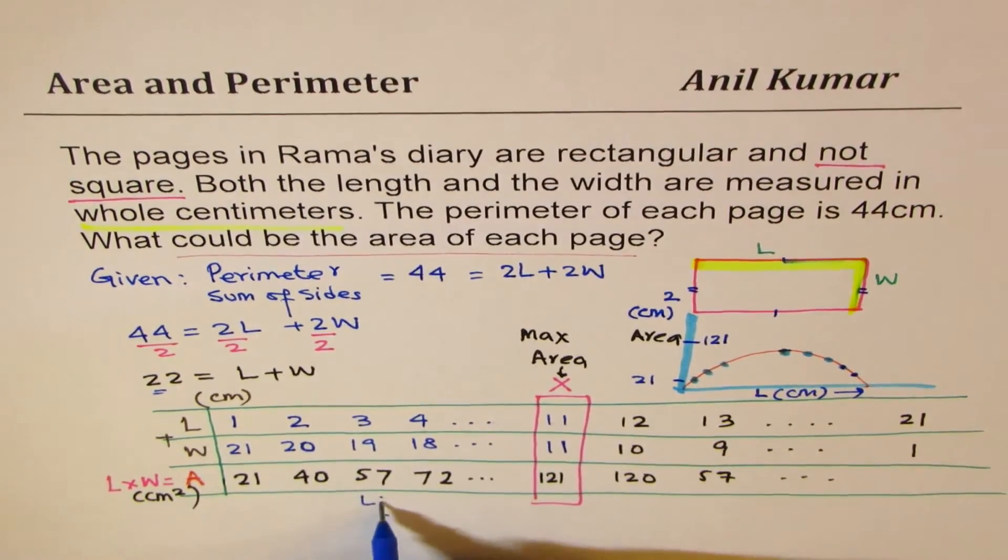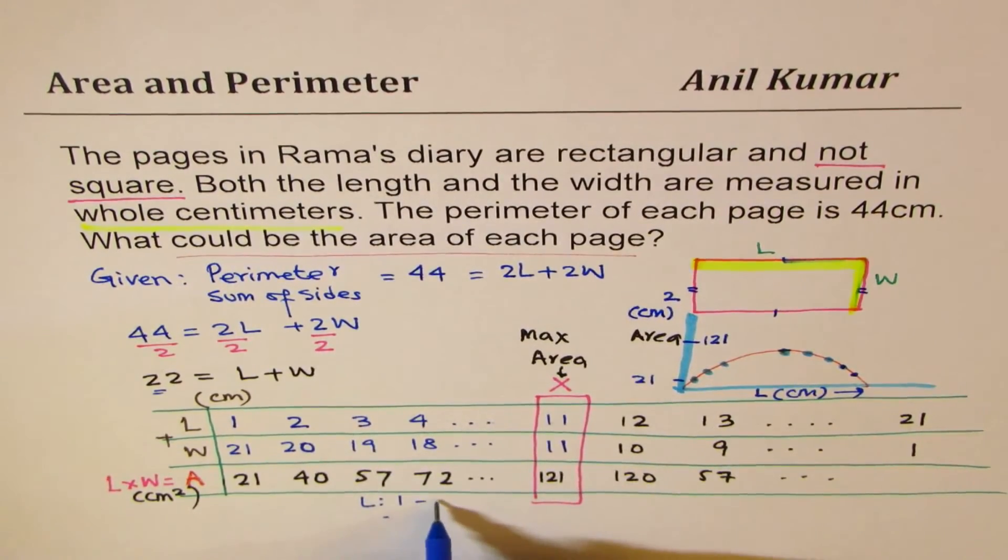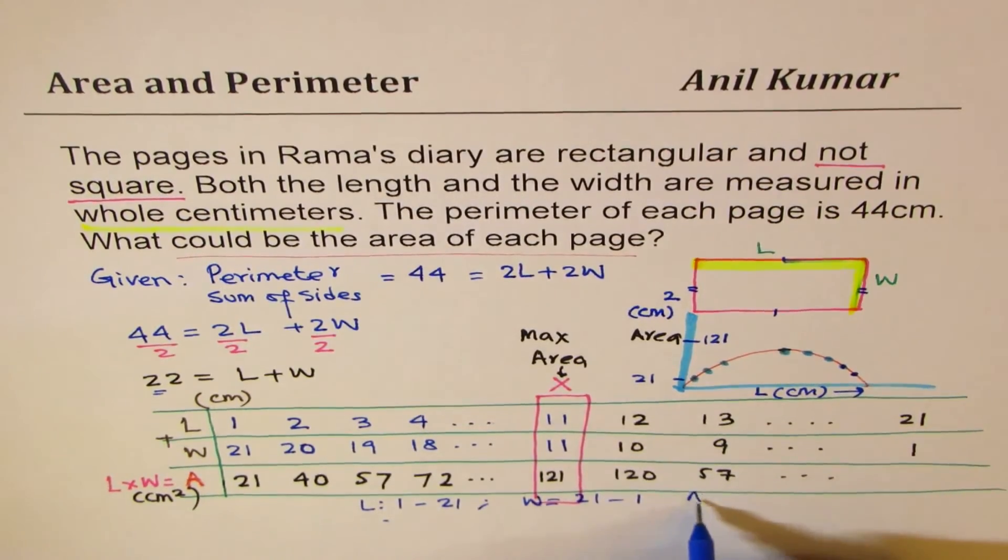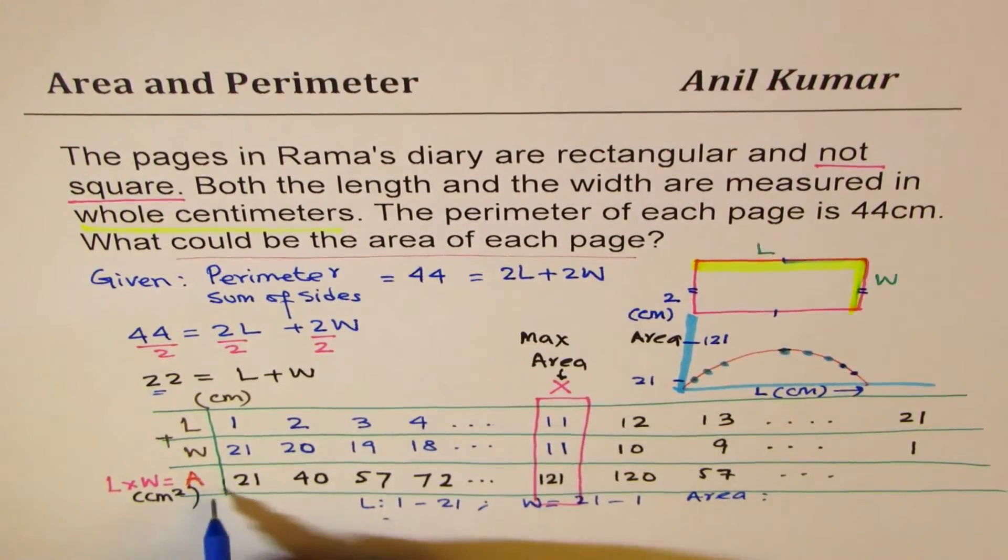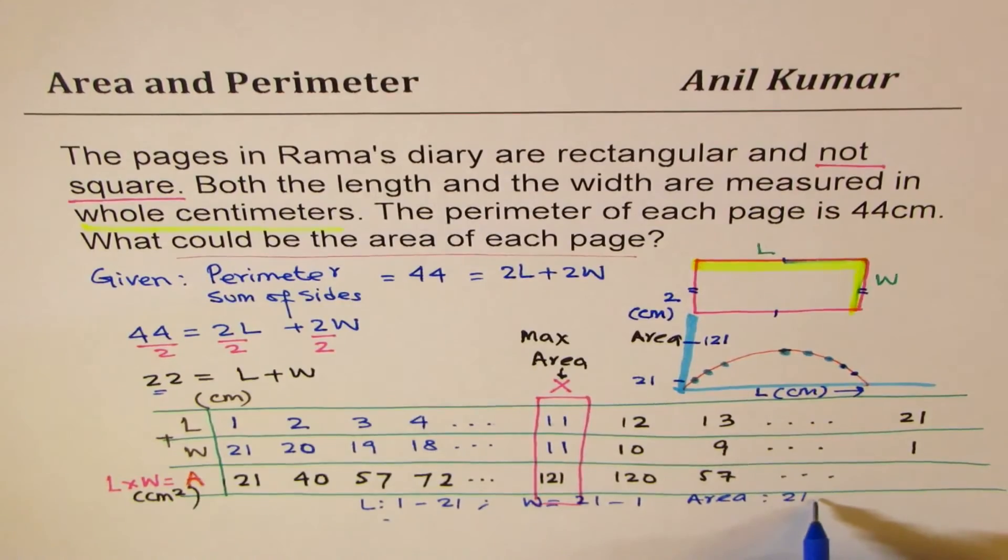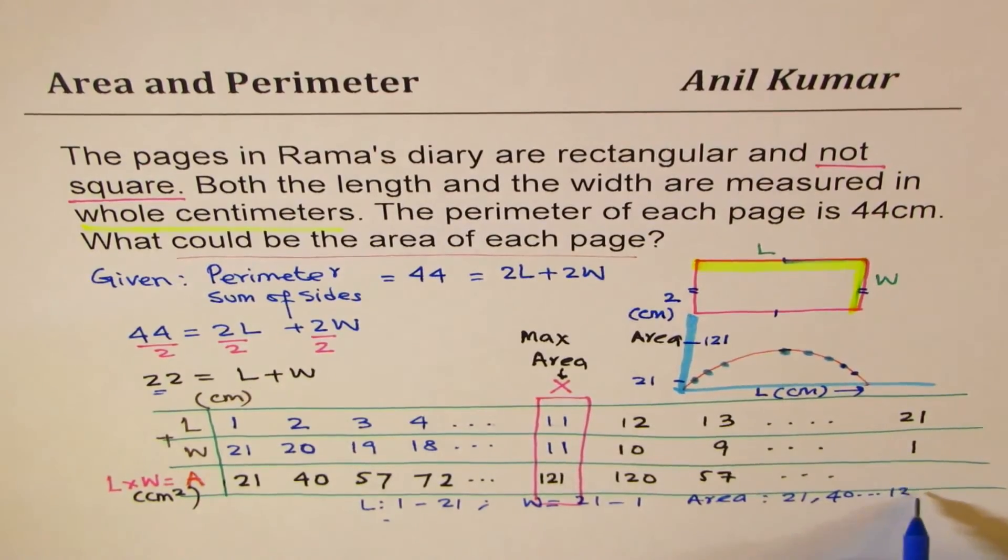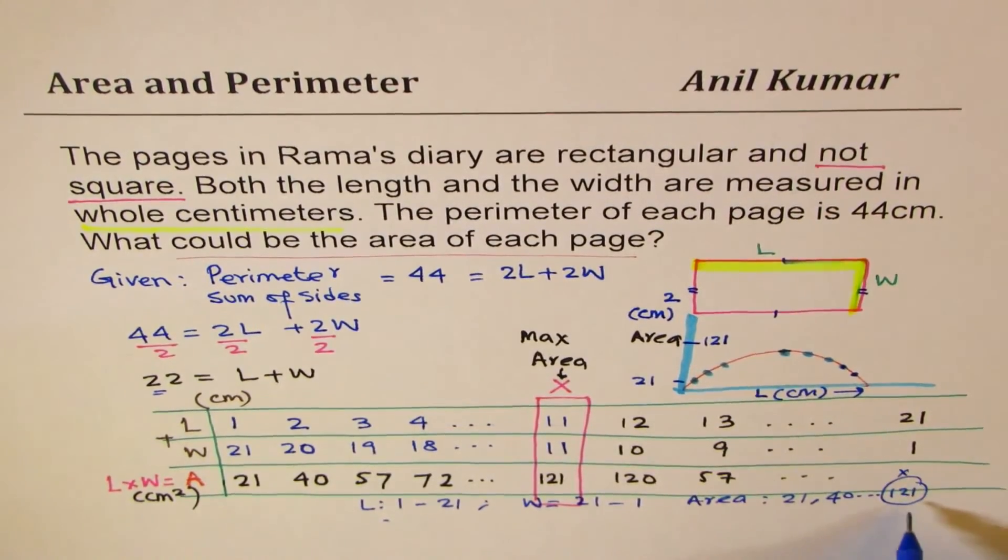The combination will be the length could be from 1 to 21. Width from 21 to 1. And the area from 21 to 121, but do not include 121. So those are possible values of area.